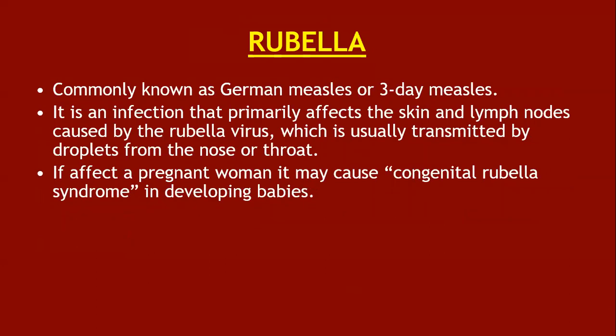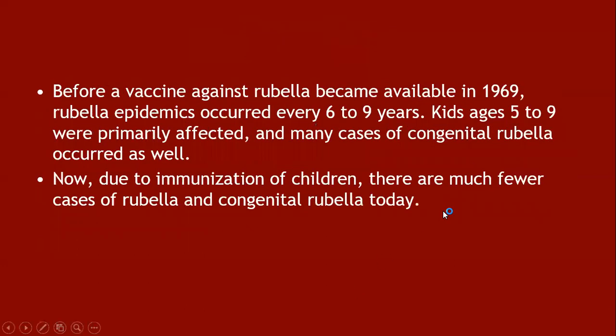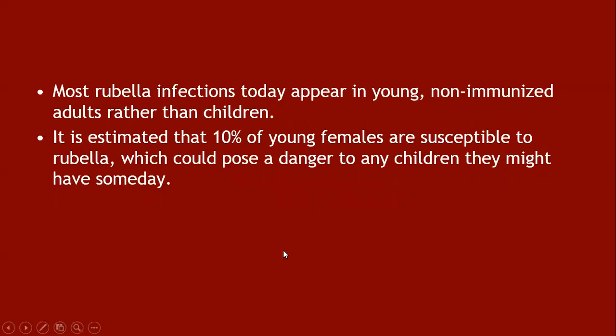Rubella is another childhood exanthem, also known as German measles or three-day measles. It is an infection that primarily affects the skin and lymph nodes, caused by rubella virus, which like measles is transmitted by droplets from the nose and throat. The major concern is that if it affects pregnant women it causes congenital rubella syndrome in the developing baby. Before a vaccine became available in 1969, rubella epidemics occurred every six to nine years; now due to immunization, there are far fewer cases, and most infections today appear in young non-immunized adults.